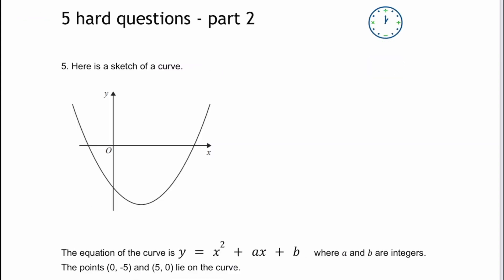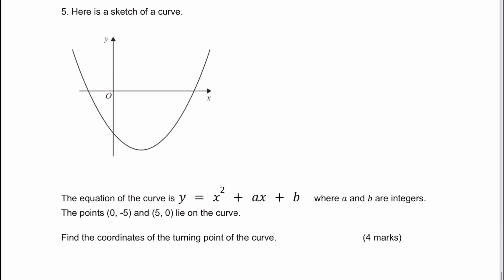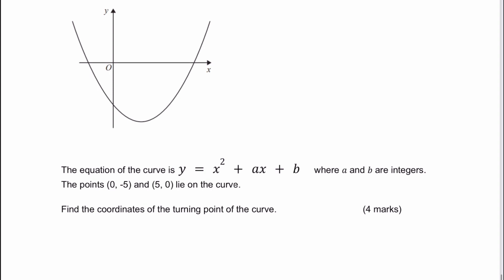So this is the fifth question in this particular playlist. It says here is the sketch of a curve, and we're told that the curve follows a quadratic equation: y equals x squared plus ax plus b. A and b are whole numbers and we've got the points (0, -5) and (5, 0). So actually it's not too bad.